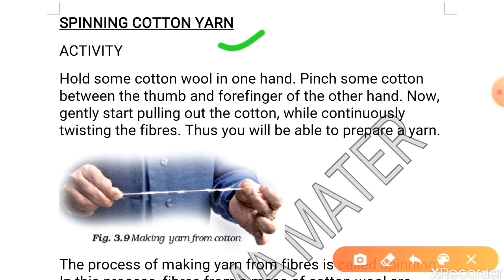For this activity students you need cotton wool. So hold some cotton wool in one hand. Pinch some cotton between the thumb and forefinger of other hand. Now gently start pulling out cotton while continuously twisting the fiber. You will be able to make a yarn.